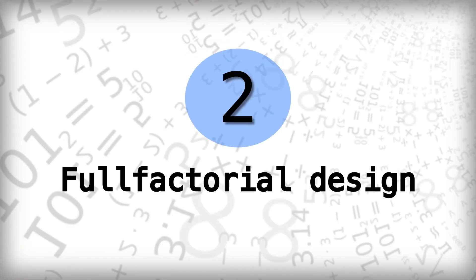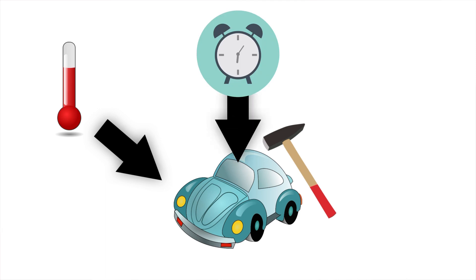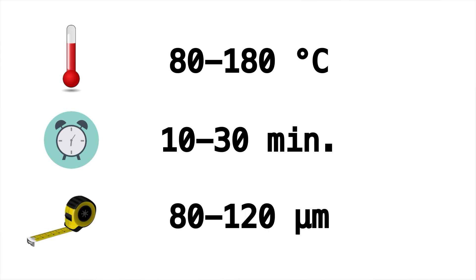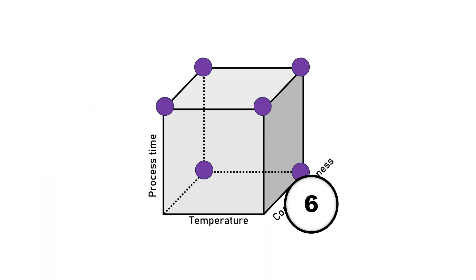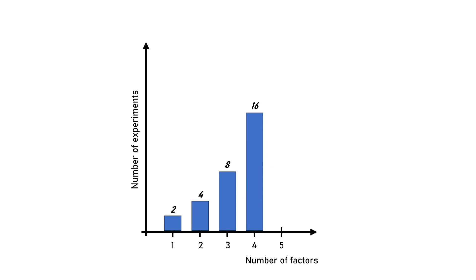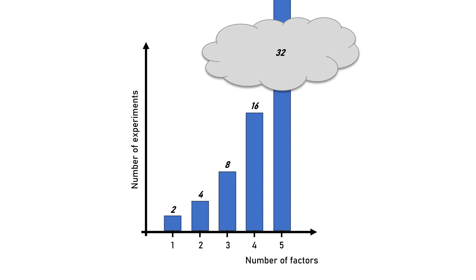Let's assume you plan an experiment with three variables: you're testing how the coating hardness is influenced by baking temperature, baking time, and coating thickness. If you think of your experimental design space as a cube, a two-level full factorial design would position your individual experiments on the edges of the cube. The total number of experiments is eight, not including replicates. This number increases exponentially with every additional factor — adding a fourth factor means 16 experiments, and a fifth means 32 individual runs.